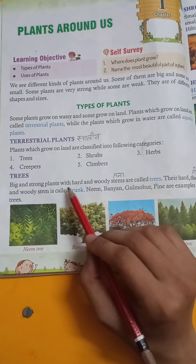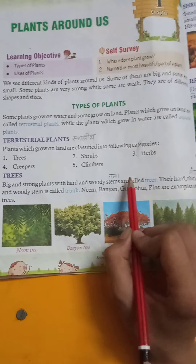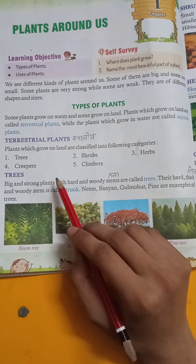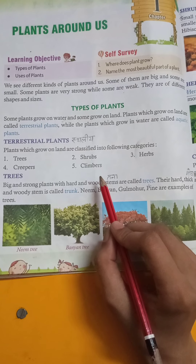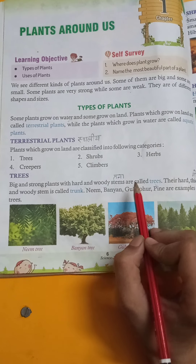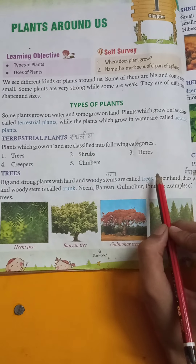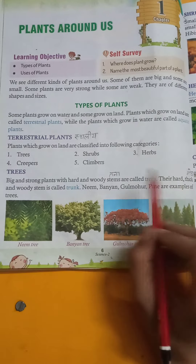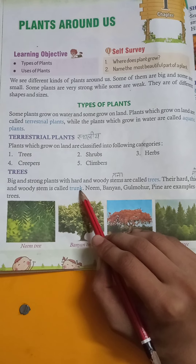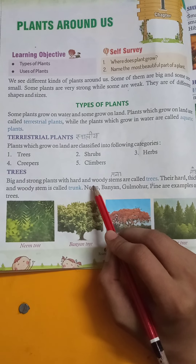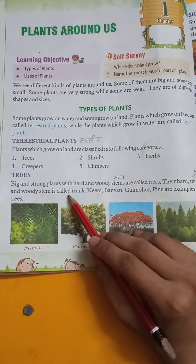Plants with hard and woody stems are called trees. The hard and woody stem is called a trunk. Stem means tana — they are hard, thick, and woody.